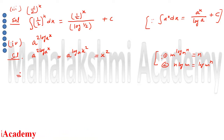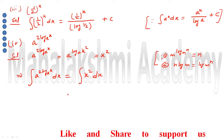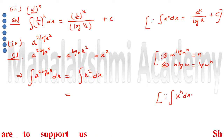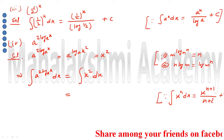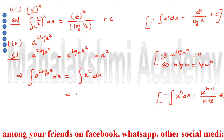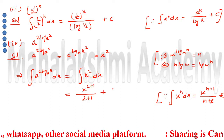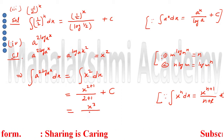Now we integrate x squared with respect to x. Using the formula for integration of x to the power n, which is x to the power n plus 1 divided by n plus 1 plus c, here n equals 2. So the answer is x to the power 2 plus 1, divided by 2 plus 1, plus c, which simplifies to x cubed divided by 3, plus c.